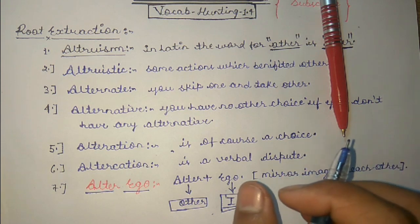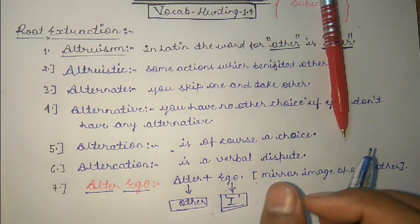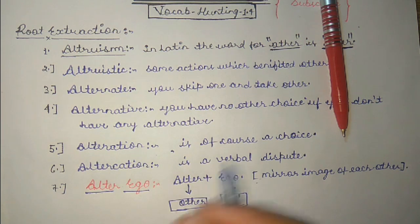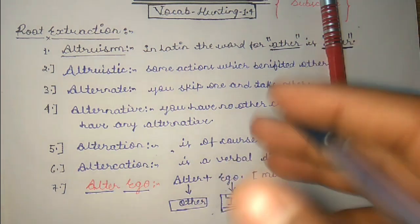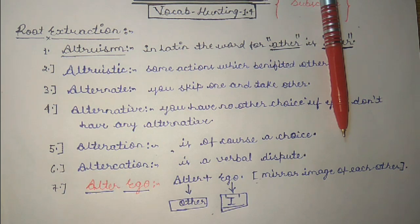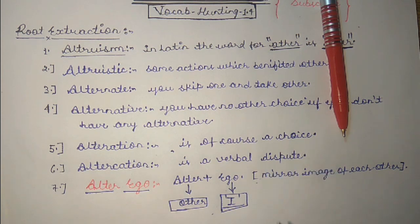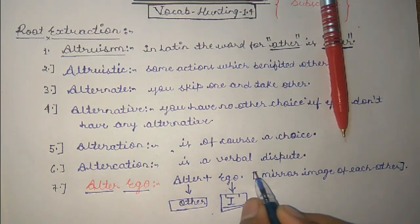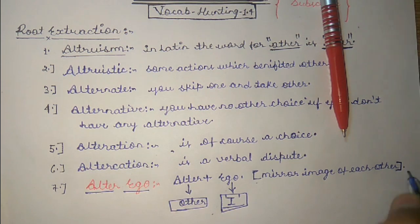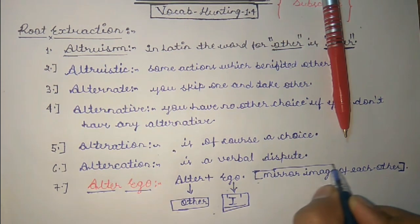A simple example: you are the alter ego of your father — if the genes are dominant — you are a mirror image of each other. Such a friend is your other self, your alter ego, a mirror image of each other. Just remember this: alter ego means a mirror image of each other.